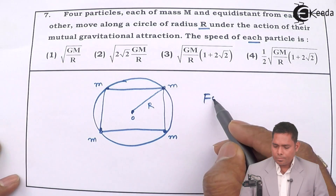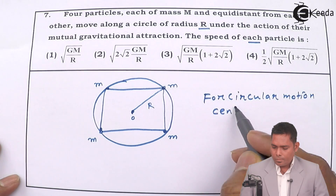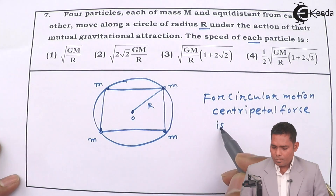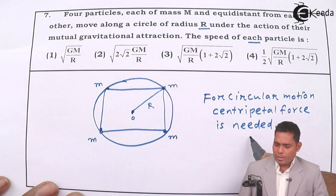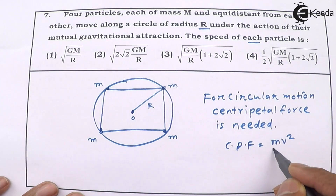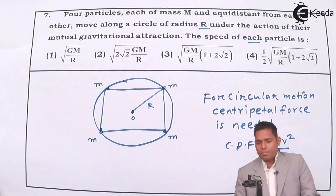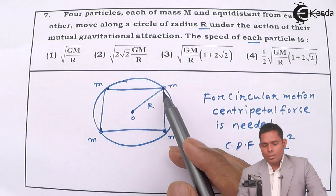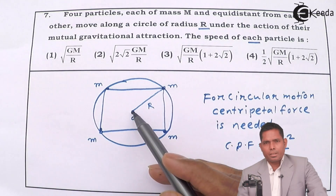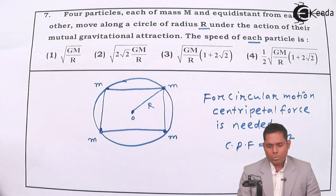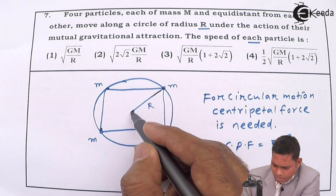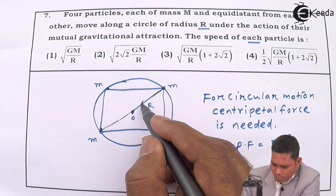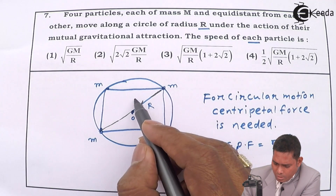For circular motion, centripetal force is needed, and that centripetal force is given by MV²/R. The net force toward the center provides the centripetal force. This particle is subjected to three forces. This adjacent mass will pull it along this line with a force I call F1.